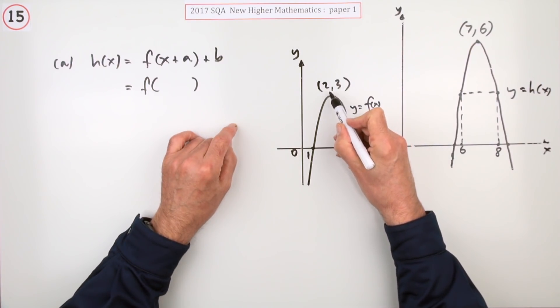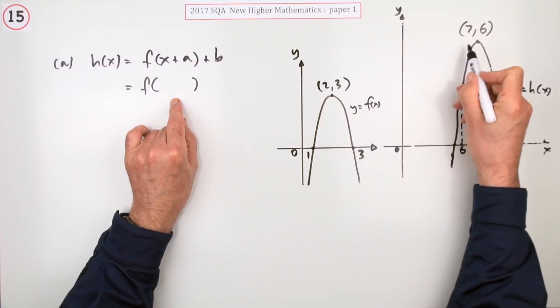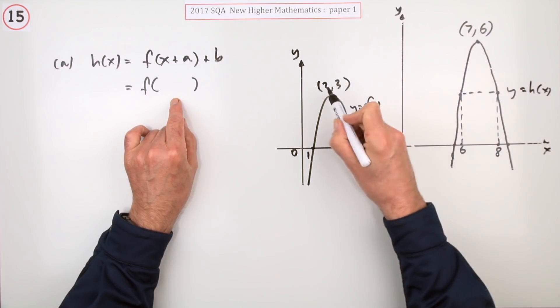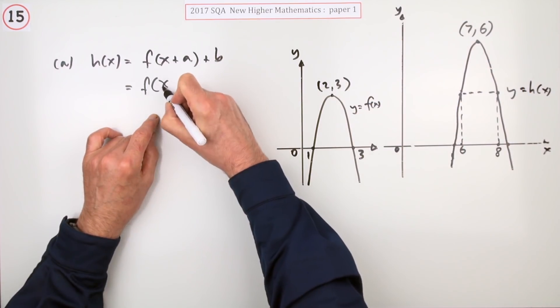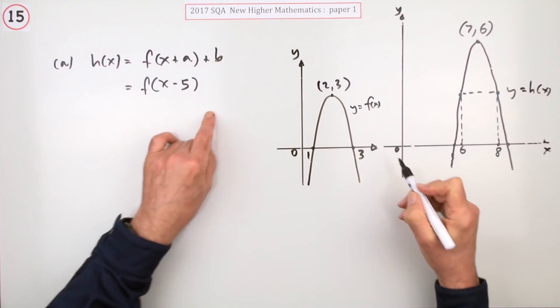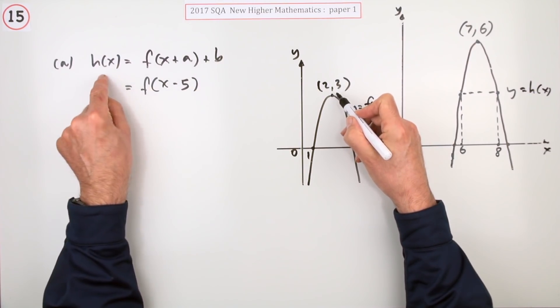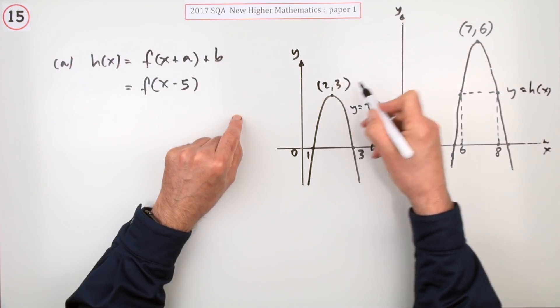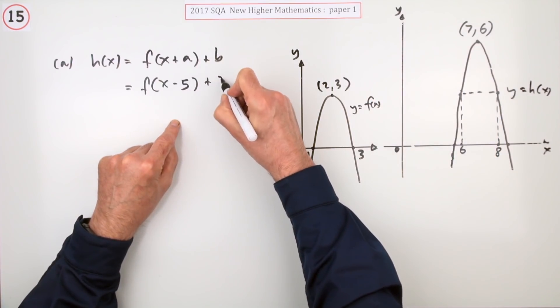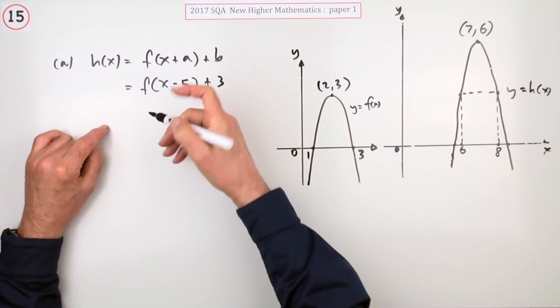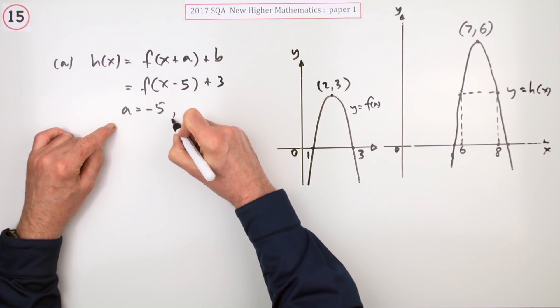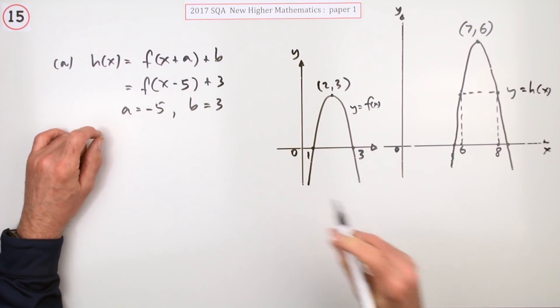You would say well this point that was (2,3) has gone along to 7, so it's gone five forward, so that must be x minus 5. But the actual values of them, the y coordinates have gone up 3, so it's definitely plus 3. Then comparing them, that means a is actually negative 5 and b is 3.